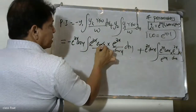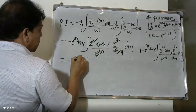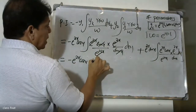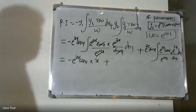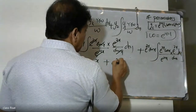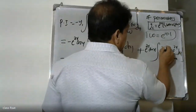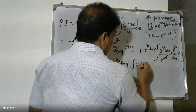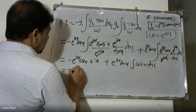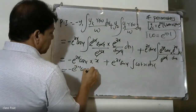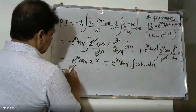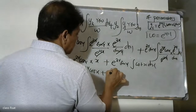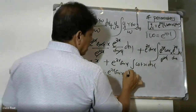Simplifying the integrals: the first integral reduces to ∫ dx = x, and the second integral gives ∫(cos x / sin x) dx = ∫ cot x dx = log|sin x|. Therefore the particular integral terms become -e^(2x) cos x · x and e^(2x) sin x · log|sin x|.